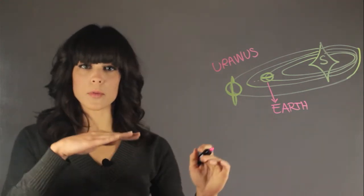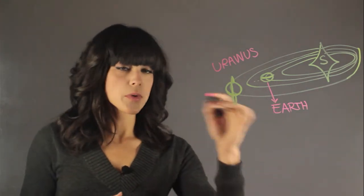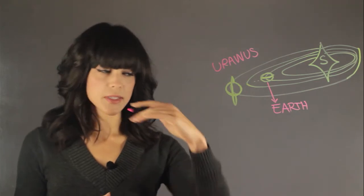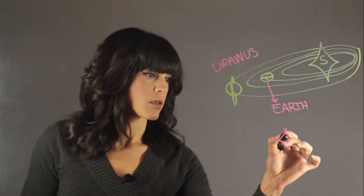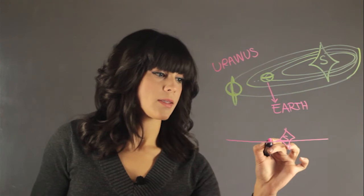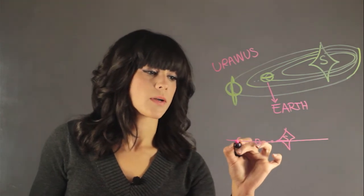Most planets have an orbital plane. So let's say if you were to look at the solar system sideways, it will be like this and all the planets will lie somewhere around this line.